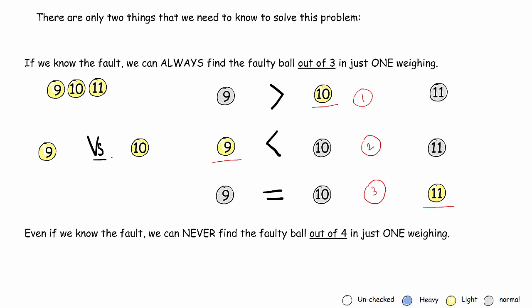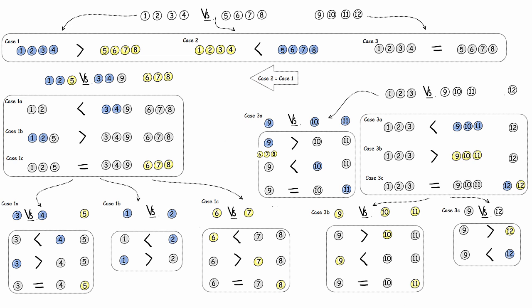But if we have four balls to begin with, no matter how we arrange them, we'll never be able to find the faulty ball in just one weighing. Now before we begin, here's a flowchart of everything that we're about to do. For those of you who are here for a quick solution, you can skip the rest of the video.